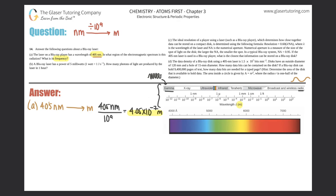I look at the exponent first — I have 10 to the negative seventh, so I'm somewhere in that range on the spectrum. Now I need to determine if I'm in ultraviolet light, infrared, or maybe in the visible light color spectrum.